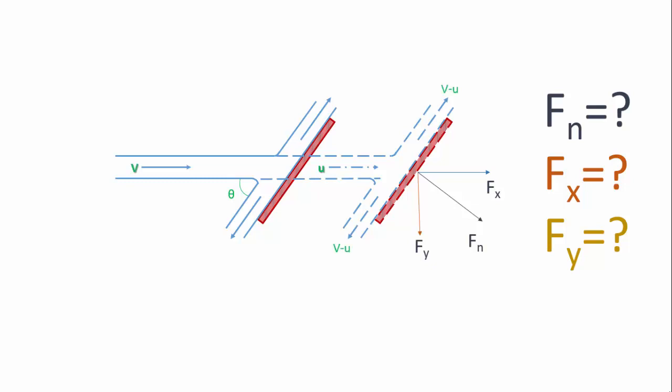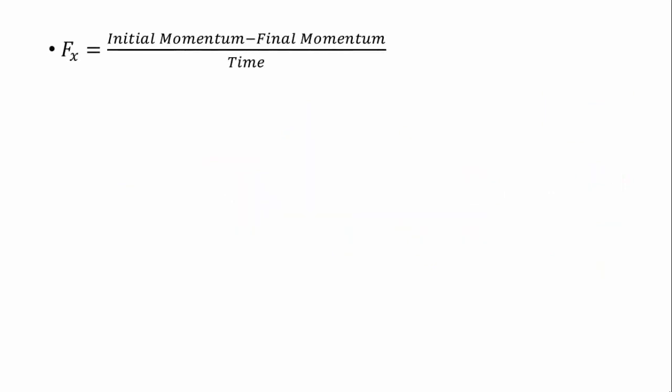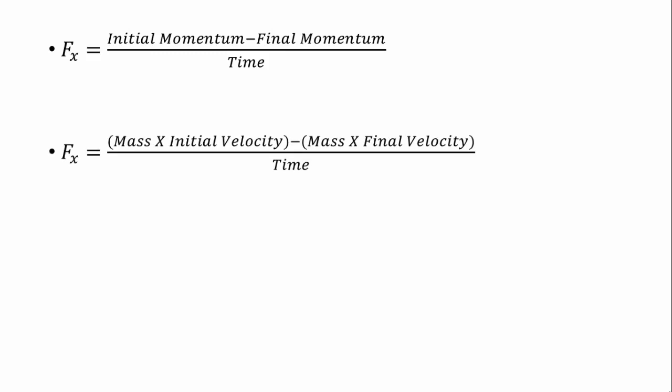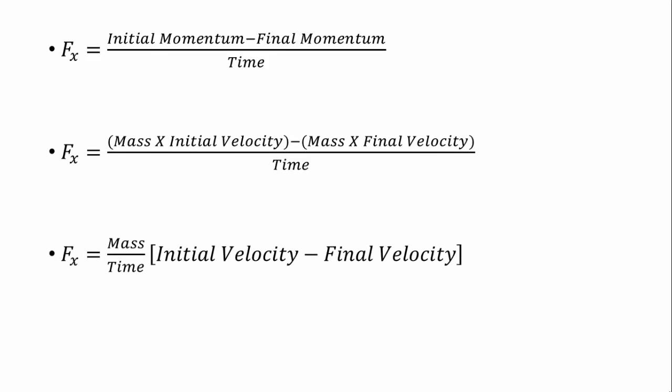In general, the force exerted by a jet on a plate is the rate of change of momentum along the direction of the force. Hence, the force exerted along any direction x is equal to the initial momentum of the fluid minus the final momentum, divided by time. Since momentum is mass times velocity, taking out the common terms mass and time gives us the mass flow rate.